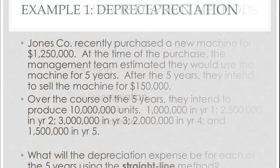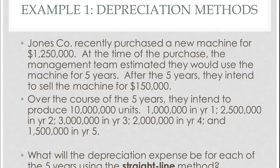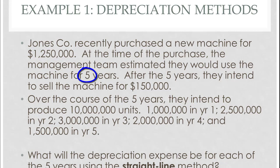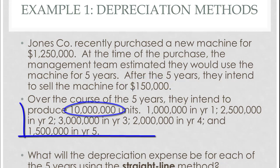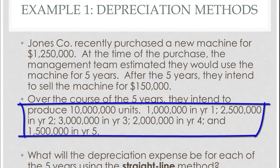Here's our example company — Jonesco. They purchased a new machine for $1.25 million. At the time, they thought they would be able to use it for about five years and then sell the machine for $150,000. Over the course of those five years, they wanted to produce about 10 million units. Here's the breakdown of when they think they'll produce each of those 10 million units.